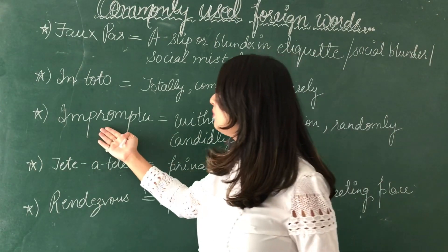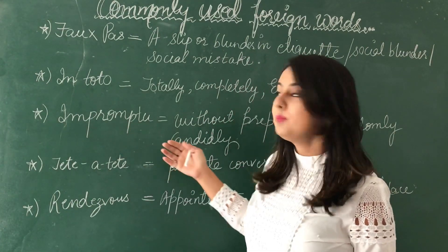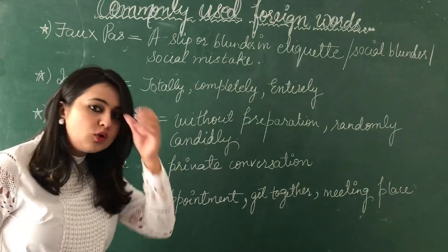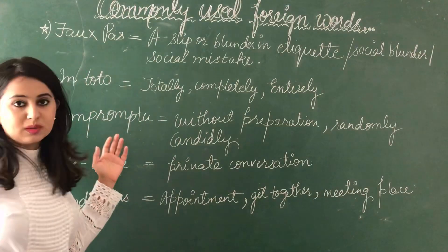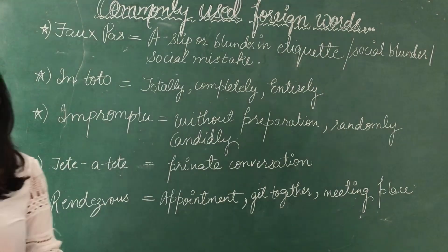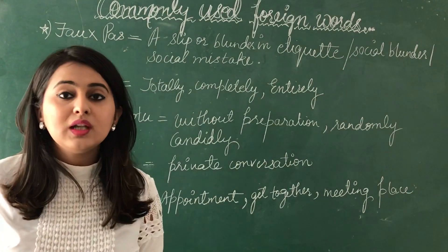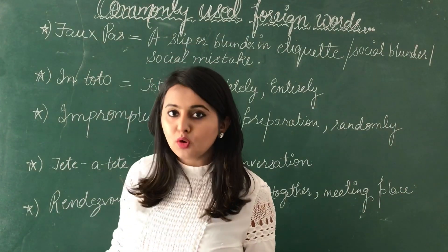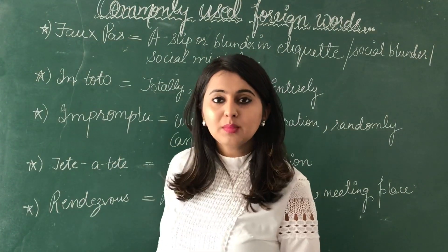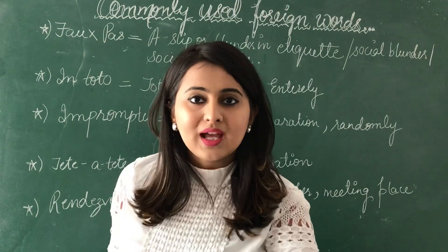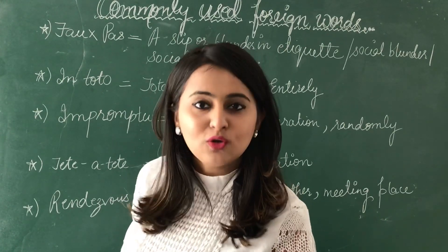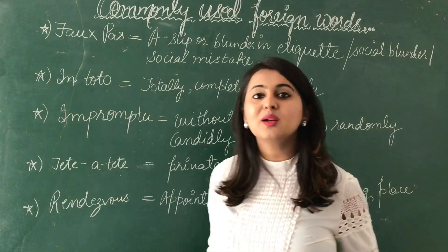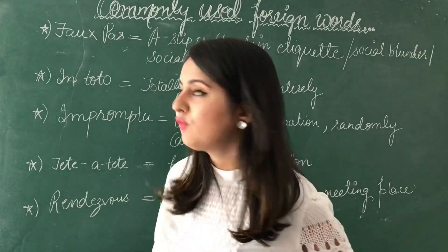The third word is 'impromptu'. Impromptu means without preparation — something we are doing randomly or candidly, without any proper planning. For example: I gave an impromptu speech in the morning assembly today, meaning a speech without preparation. Or: everybody please get ready as I am going to take an impromptu test today — a random surprise test. This is how we can use 'impromptu'.